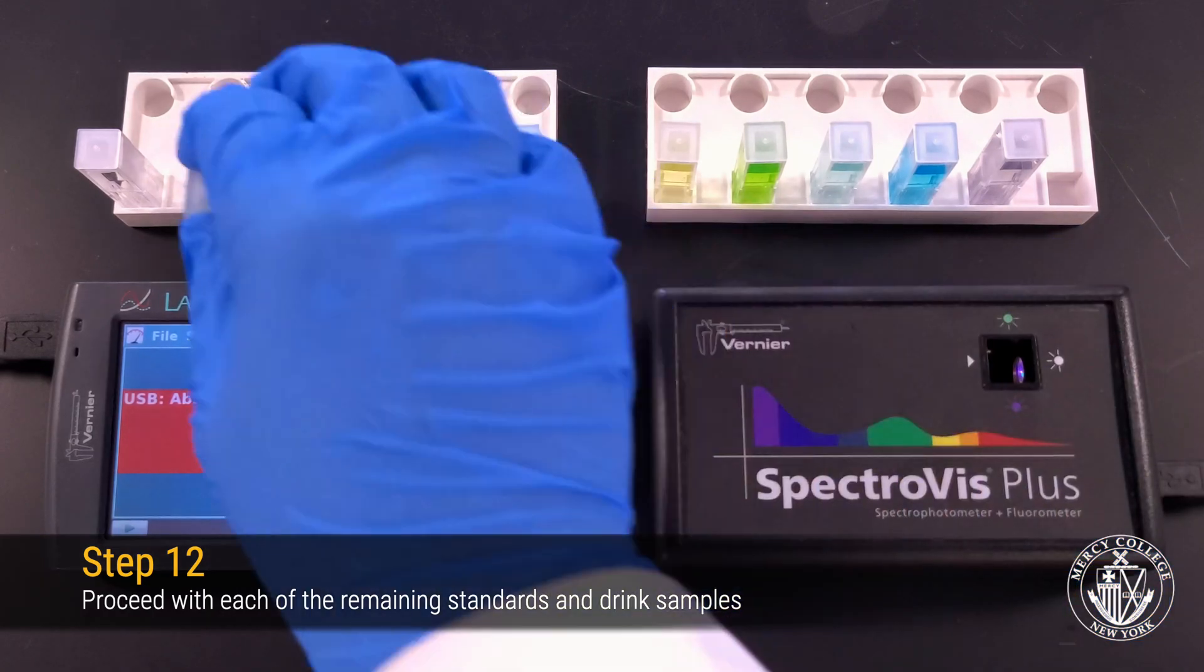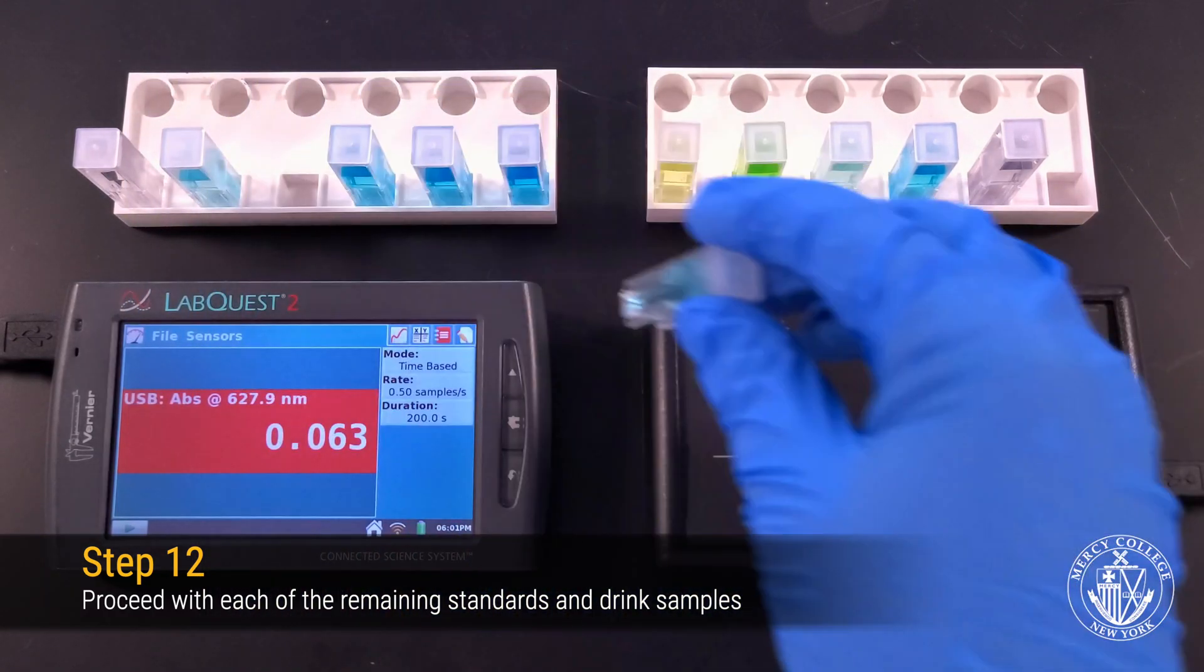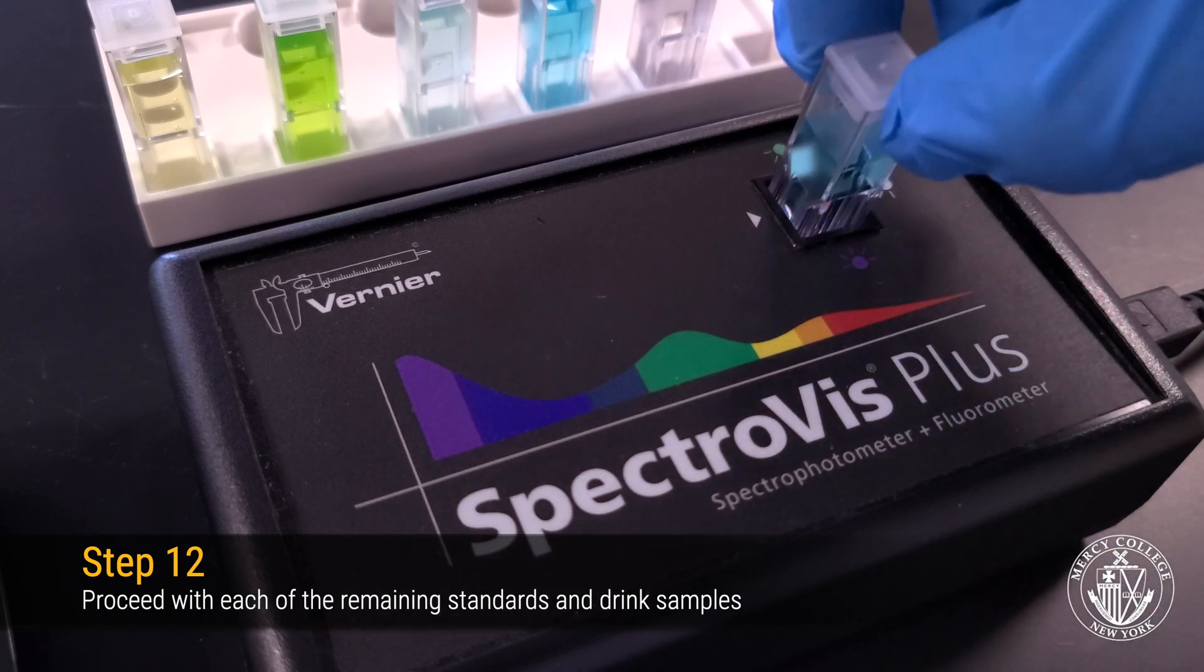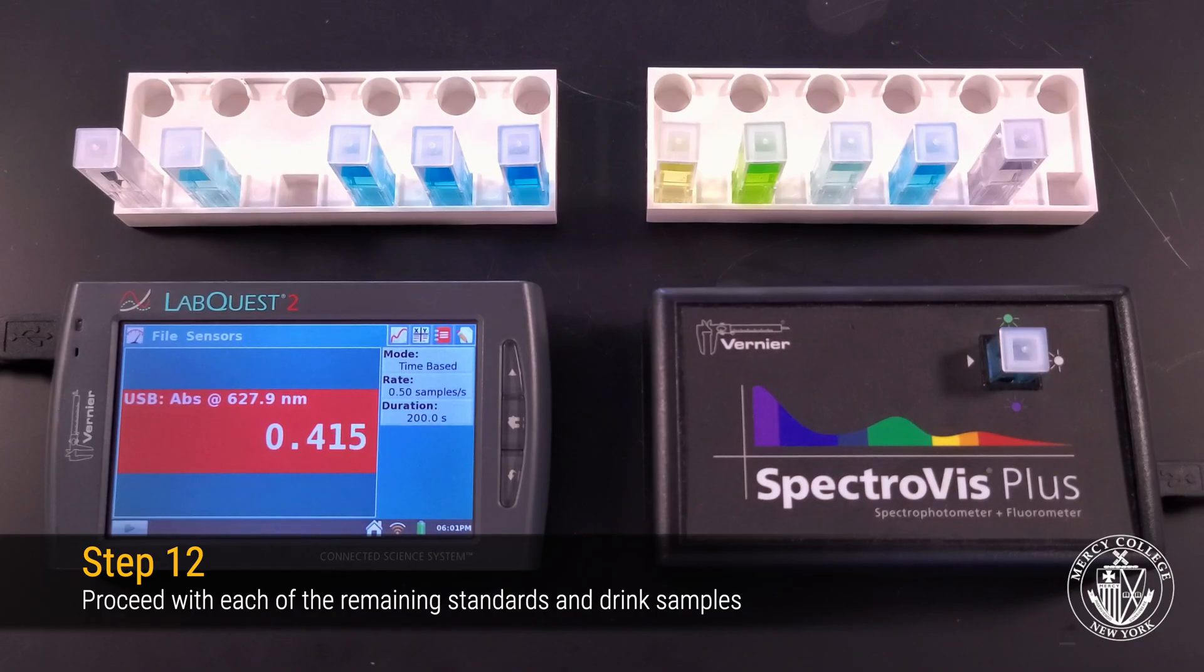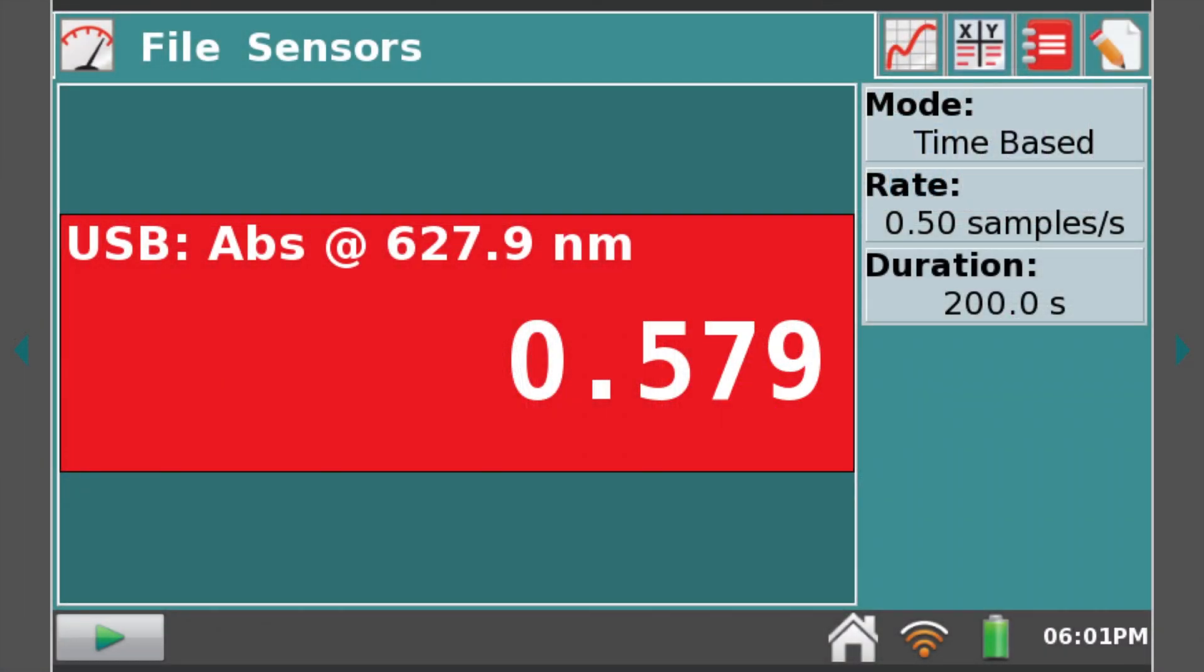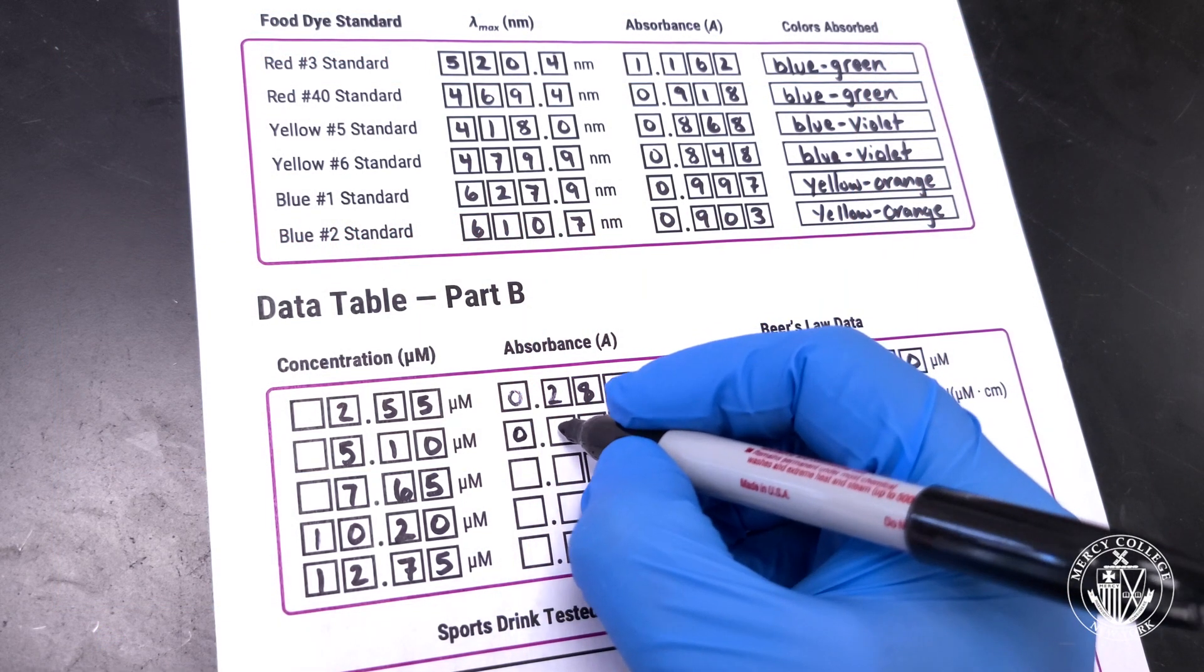Repeat the process for your remaining dye standards working from the most dilute to the most concentrated sample. Wait for the reading to stabilize and record the value on your datasheet. Our second standard appears to have an absorbance of 0.580.